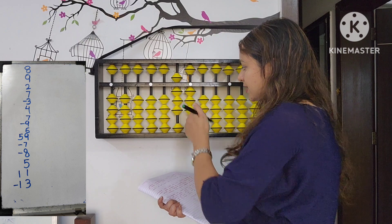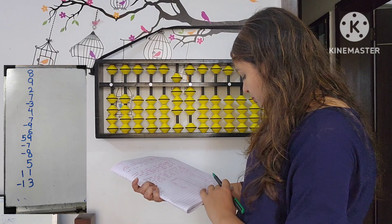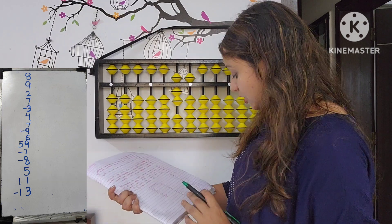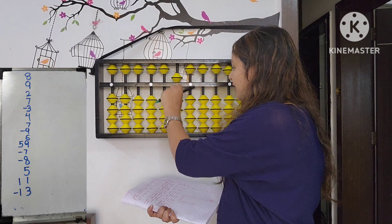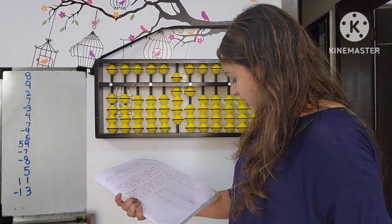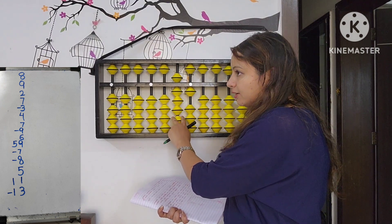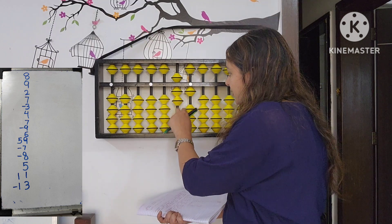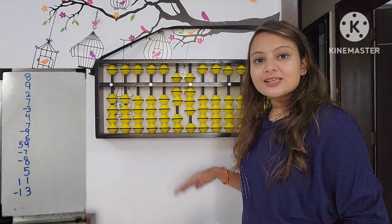Then less 7: less 10, add 3 — big friend formula. Then less 8: less 10, add 5, less 3 — combo formula. Then 5: less 5, add 10 — big friend formula. Then 11: happening simple. Then less 13: first less 10 — happening simple — then less 3: less 10, add 7 — big friend formula. The answer is 78.